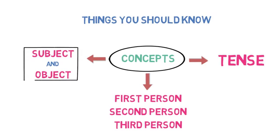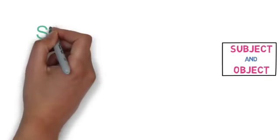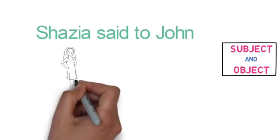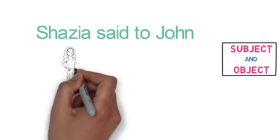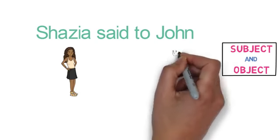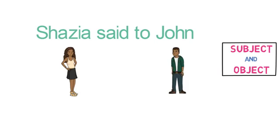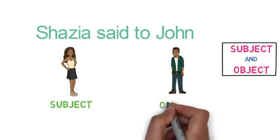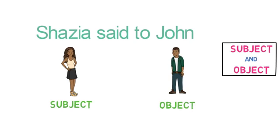What is the subject and object in a sentence? We will understand it with an example. In the sentence 'Sazia said to John', Sazia is the person doing the action and John is the person receiving the action. The person doing the action is the subject and the person at the receiving end is the object. Please keep that in mind.